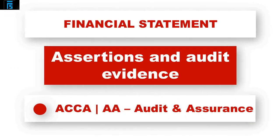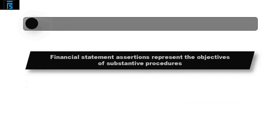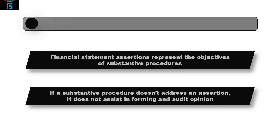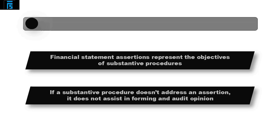This video will cover the topic of financial statement assertions. These assertions relate directly to the substantive audit procedures that the auditor carries out during the audit process. In simple terms, the financial statement assertions represent the key objectives of the substantive audit procedures that are prepared. If a substantive procedure does not address an assertion, it does not assist the auditor in forming the opinion.